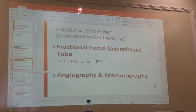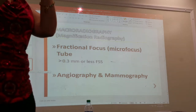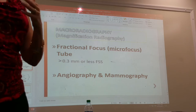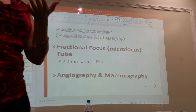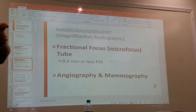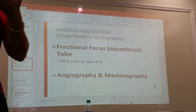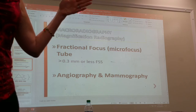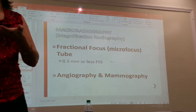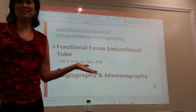Any type of magnification decreases radiographic quality, though sometimes we do want to magnify. Angiography and mammography are typical examples — we look at tiny vessels and tiny microcalcifications in breast tissue. In mammography, we increase the OID to cause magnification. To compensate for that increased OID, you use a really small fractional focus tube — a very small focal spot size.